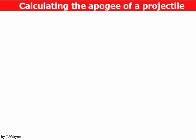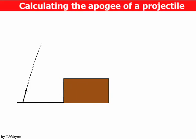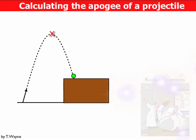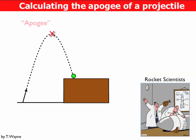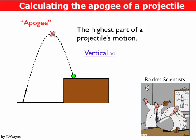This video is going to show you how to calculate the height to apogee for a projectile. If we look at projectile motion, when it reaches its highest point, that highest point has a name. Rocket scientists call it apogee. So when we refer to the apogee of a projectile, we're talking about the highest point of motion.